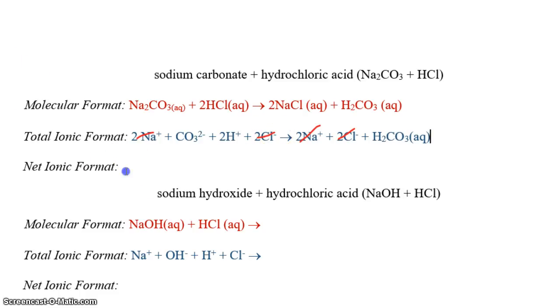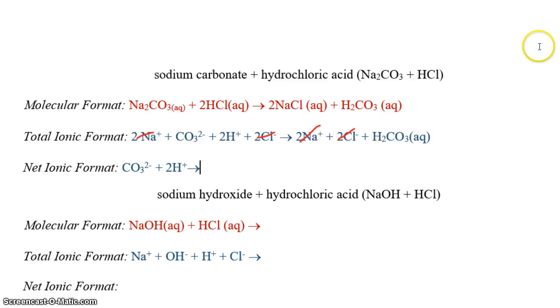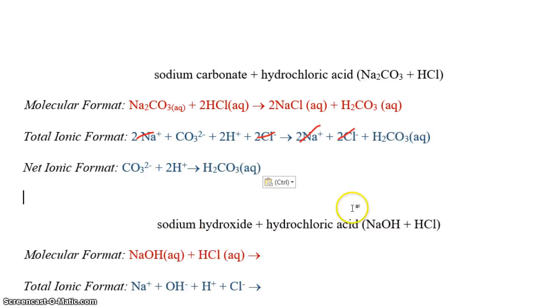So now let's go down here to our net ionic format, and we can just copy and paste. It's much easier. So we've got carbonate ion plus two hydrogen ions, and those react to form carbonic acid. This reaction occurs because a weak electrolyte is formed, and it has an overall net ionic equation.